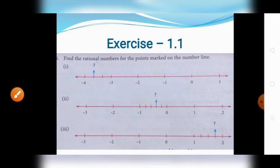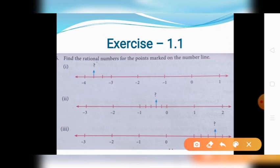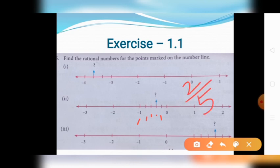The number lies between 0 and minus 1. The number line is divided into 5 equal parts. The number is represented in the second subdivision. Therefore, the whole number is 0. The number represented is 2 divided by 5 equal parts, so the rational number is minus 2 by 5.